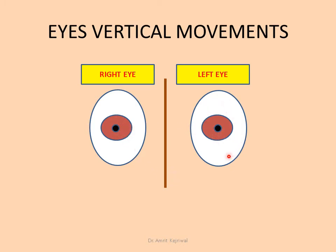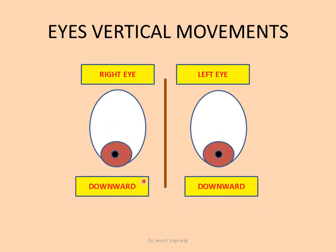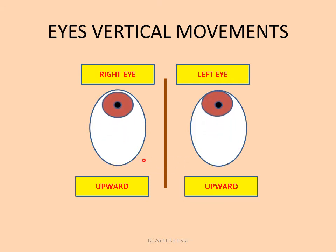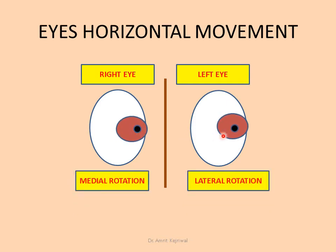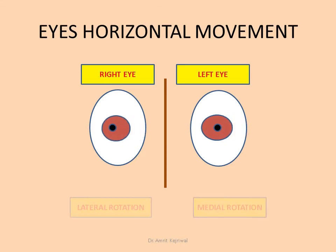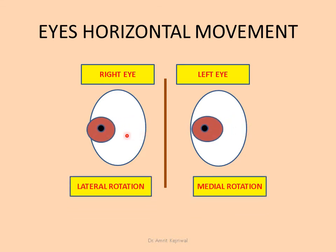The eyes have been deliberately distorted. It will give us a better understanding of extorsion and intorsion which will be discussed later on. This is the downward movements of the eyes — conjugate, simultaneous — and this is the upward movements of the eyes. This is the medial rotation of the right eye and lateral rotation of the left eye, both simultaneous, and this is the lateral rotation of the right eye and medial rotation of the left eye.